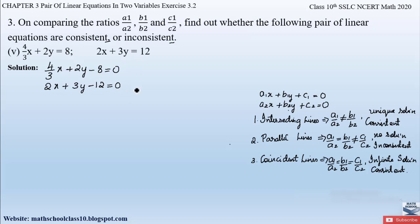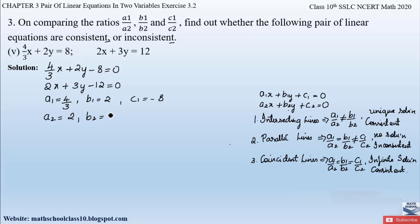Comparing with the general form of the linear pair of equations, let us write down the coefficients a1, b1, c1 and a2, b2, c2. From the first equation: a1 is 4/3, b1 is 2, and c1 is minus 8. From the second equation: a2 is 2, b2 is 3, and c2 is minus 12.